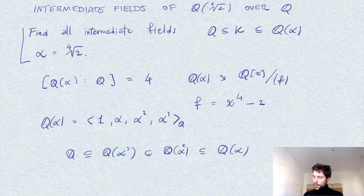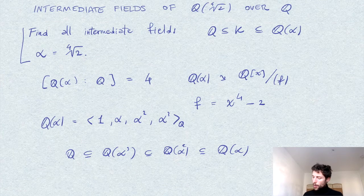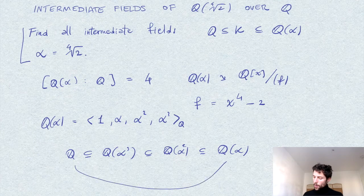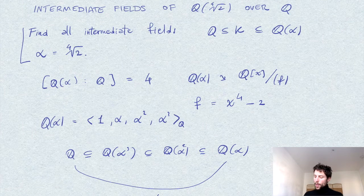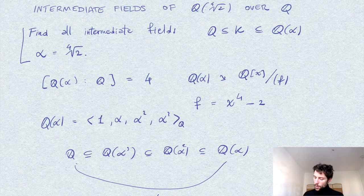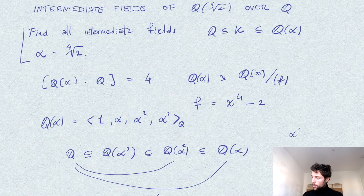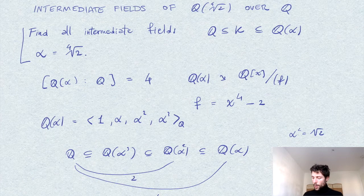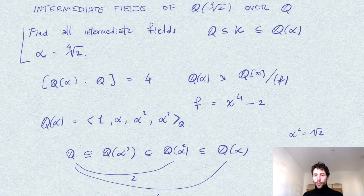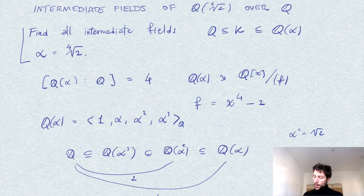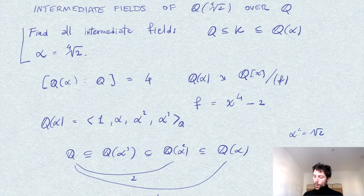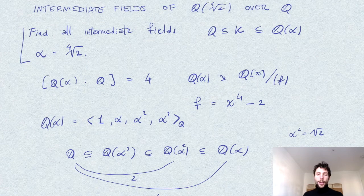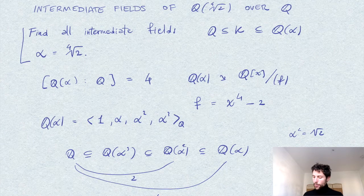As we said, the degree [Q(α):Q] is 4, and the degree of Q(α²)—where α² = √2—is 2. In particular, we have restrictions: clearly [Q(α³):Q] must be 2 or 1, and it cannot be 1 since Q(α³) ≠ Q.